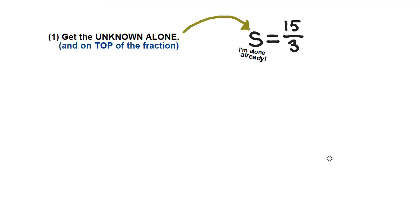What you notice is it's already alone — there's nothing nearby it. Look on the equal sign: everything on the left-hand side of the equal sign, there's nothing there but the S. The S is alone, so basically we're done solving this problem. We just have to put everything on the right-hand side into our calculator: 15 divided by 3, and that will give us the answer.